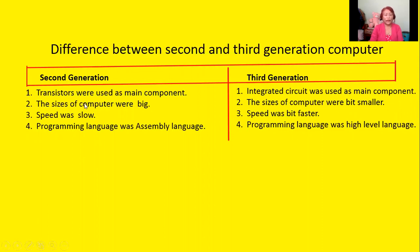Number two: the size of second generation computers was big, and the size of third generation computers was a bit smaller. The speed of second generation computers was slow, and the speed of third generation computers was a bit faster — faster than second generation computers.